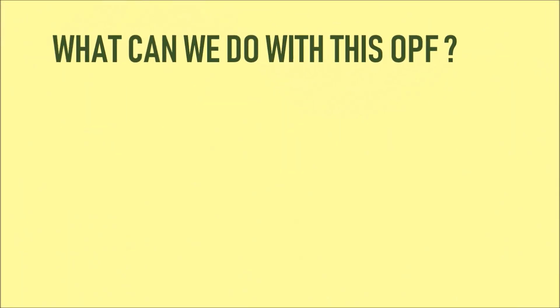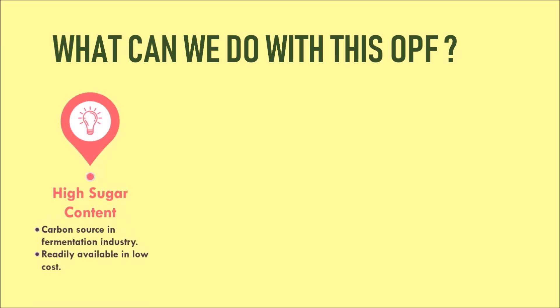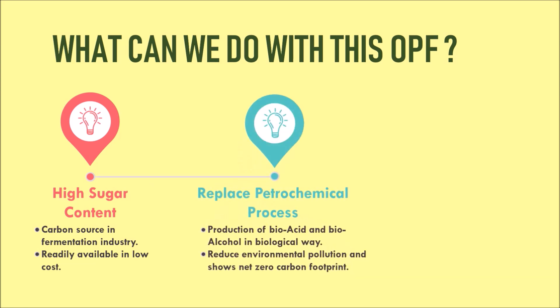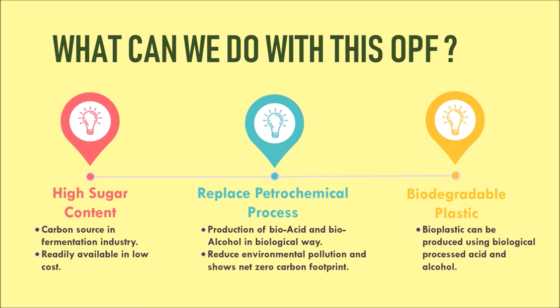OPF has a high amount of sugar. It can be utilized as the cheapest potential carbon source for the fermentation industry. This includes production of acid and alcohol in a biological path that may replace the petrochemical process in the future. The generated bioacid and bioalcohol can be used to produce bioplastic.